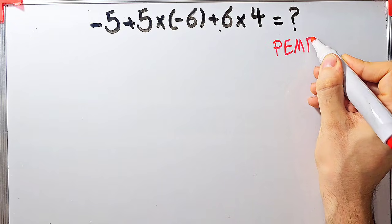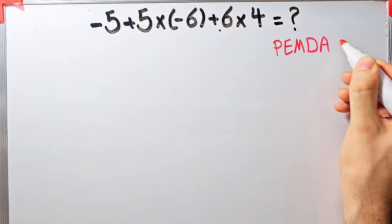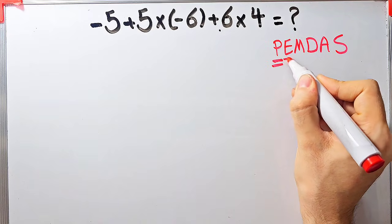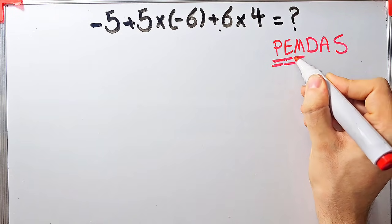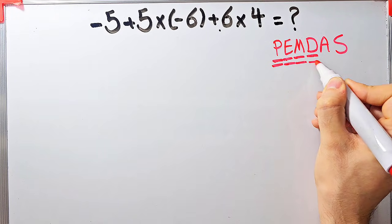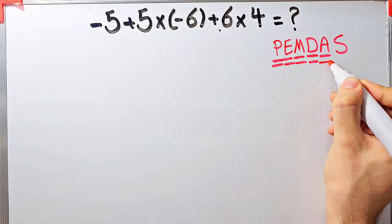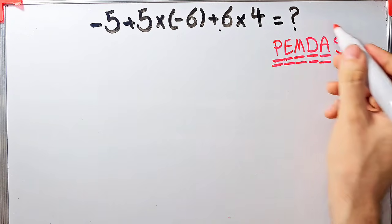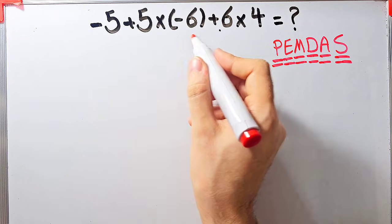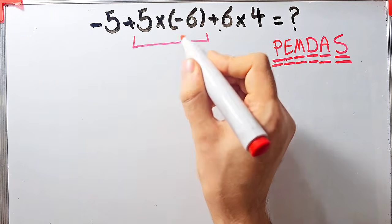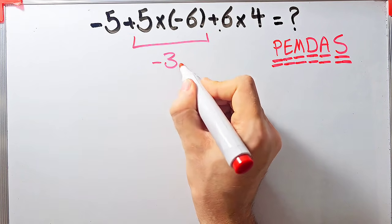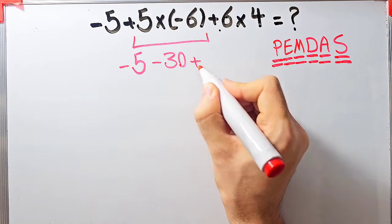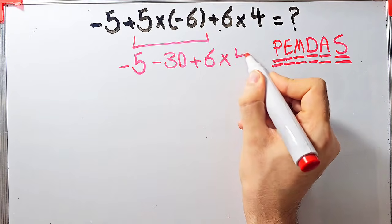PEMDAS shows the priority of the mathematical operations, and if you don't pay attention to this rule you get the wrong answer. P stands for parenthesis, E for exponent, M for multiplication, D for division, A for addition, and S for subtraction. According to the PEMDAS rule, first we simplify the multiplication: 5 times negative 6 equals negative 30. Now we have negative 5 minus 30, plus 6, then times 4.